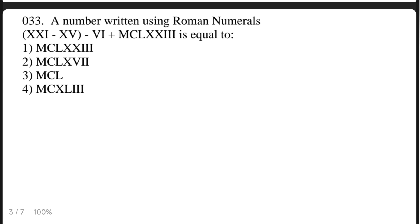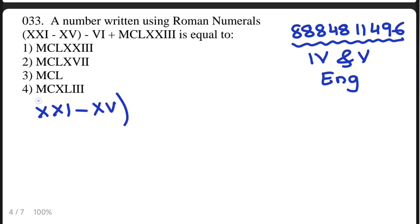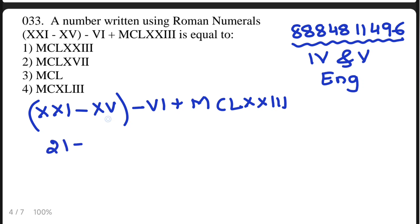The 33rd question from the Sainik School year paper. A number written using Roman numerals: XXI minus XV in brackets, minus VI plus MCLXXIII. So XXI means 21, XV means 15, VI means 6, and the remaining value is 1173.